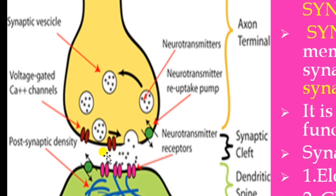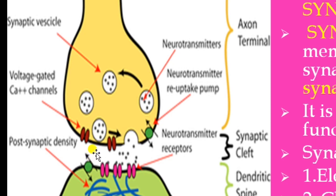The synapse is the structural gap and functional bridge between the two neurons. The synapse is of two types: electrical synapse and chemical synapse. In electrical synapse, the gap between the presynaptic membrane and postsynaptic membrane is almost negligible — these two membranes lie very close to each other and the action potential is transmitted directly through this gap.